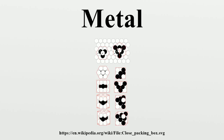Electrical properties: The electrical and thermal conductivities of metals originate from the fact that their outer electrons are delocalized. This situation can be visualized by seeing the atomic structure of a metal as a collection of atoms embedded in a sea of highly mobile electrons. The electrical conductivity, as well as the electrons' contribution to heat capacity and heat conductivity of metals, can be calculated from the free electron model, which does not take into account the detailed structure of the ion lattice.